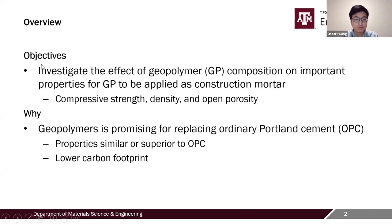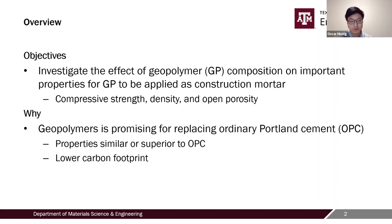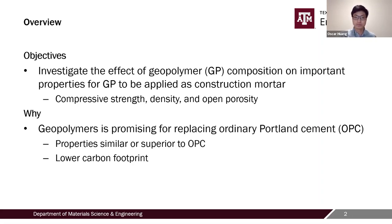A little overview: what we're trying to achieve in this project is to investigate the effect of geopolymer composition on important properties such as compressive strength, density, and open porosity, in order for geopolymer to be considered as the binder for construction mortar. This is important because geopolymer is a promising candidate for replacing ordinary Portland cement, with properties similar or superior to Portland cement, and a much lower carbon footprint since we can utilize waste, natural, or local source materials.